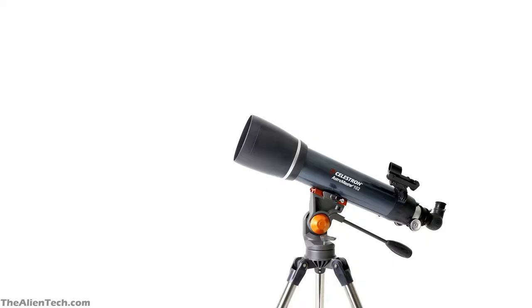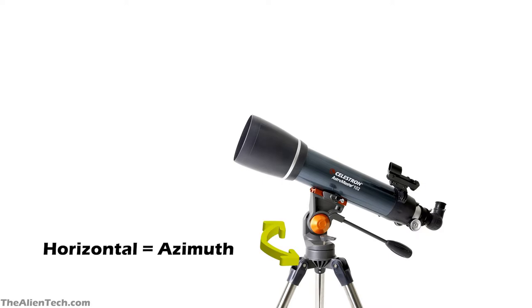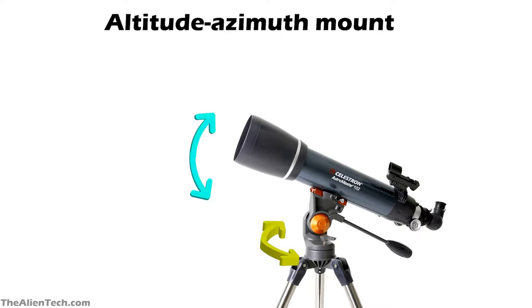The first mount is the Alt-Azimuth mount. This is the most basic type of mount — simpler and most affordable compared to other types. This mount has two planes of motion: one is vertical, which is called altitude, and the other is horizontal, which is called azimuth. Hence the name, Alt-Azimuth mount.